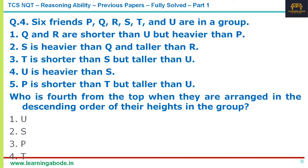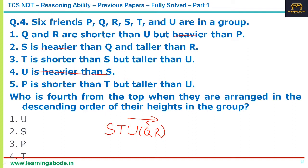The fourth question is about height. Ignore weight-related statements and focus only on height. Q and R are shorter than U. S is taller than R. T is shorter than S but taller than U, so the order is S > T > U. P is shorter than T but taller than U, giving S > P > T > U, then Q and R below U. The question asks who is fourth from the top in descending order — that is U. Answer option 1.